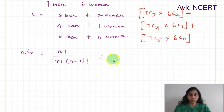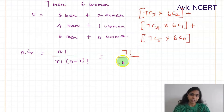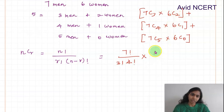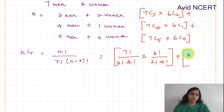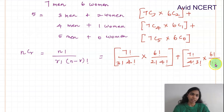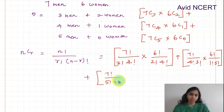Expanding each term: 7C3 = 7! / (3! × 4!), times 6C2 = 6! / (2! × 4!); plus 7C4 = 7! / (4! × 3!), times 6C1 = 6! / (1! × 5!); plus 7C5 = 7! / (5! × 2!), times 6C0 = 6! / (0! × 6!). Note that 0! equals 1.